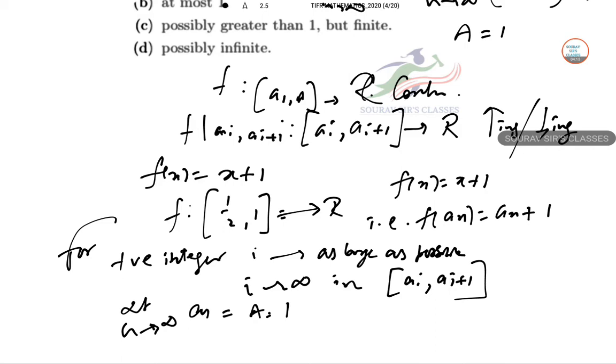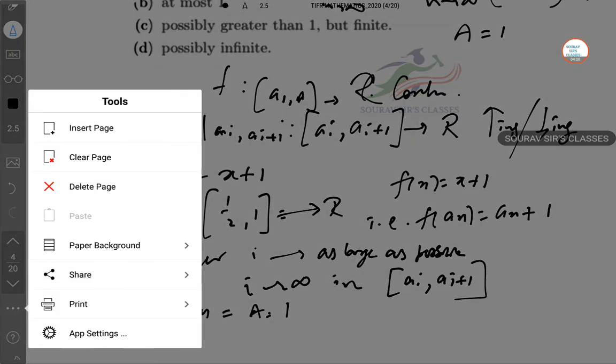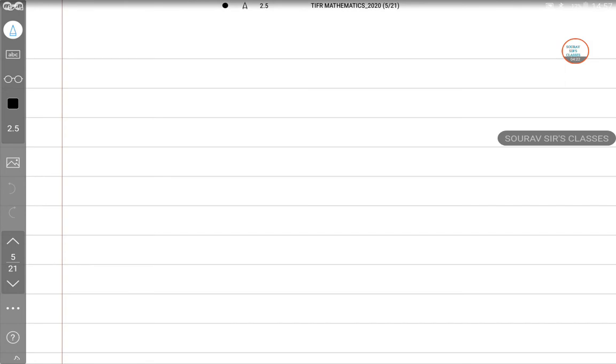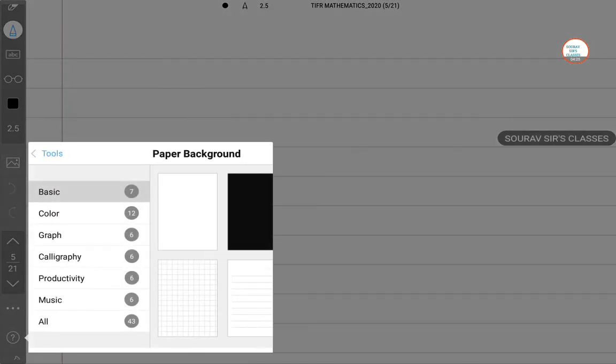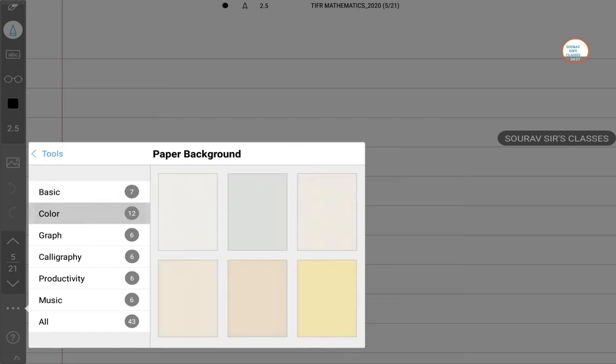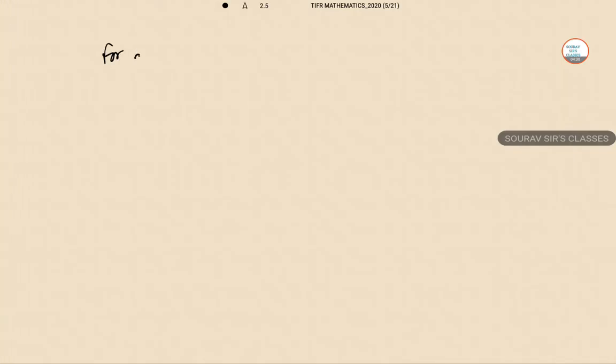Hence, for all that infinite possible values, for all those infinite values, a n and f of a n this is tends to 2. So hence as convergent sequence must have only one limit point. Convergent means one limit point.